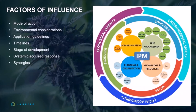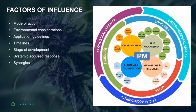It's about understanding the factors of influence and doing a cost-benefit analysis. How does this system make sense for us? Where is the risk, the reward, the cost? Take the historic IPM triangle and incorporate it into your business plan for long-term success. Understand the modes of action, the environmental considerations, the application guidelines, the dilution rate, cost, timelines for efficacy, stages of development you're encountering with your pest, systemic acquired response, and the synergies. How do these things work together?